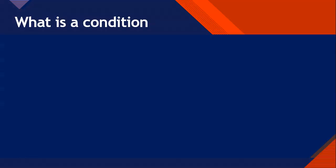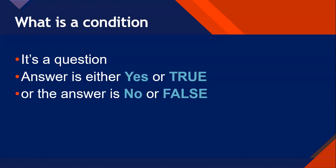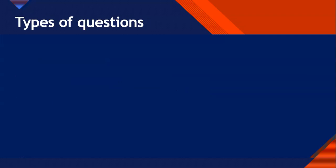So what is a condition? A condition is basically a question, and that question must either have an answer of yes or true, or an answer of no or false. You must be able to clearly say the answer to that condition is true, or the answer is false. The types of questions we ask are going to revolve around six operators.